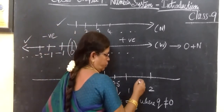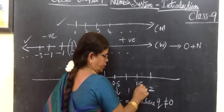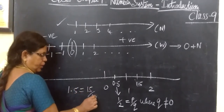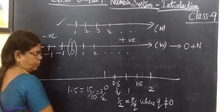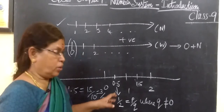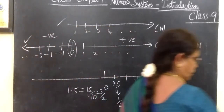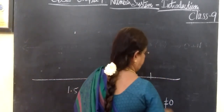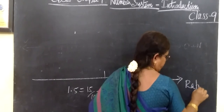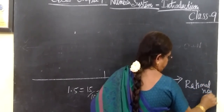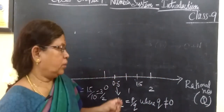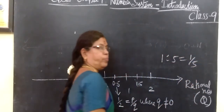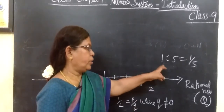Suppose you want to mark 1 and a half: that is 1.5, and in P by Q form, 1.5 equals 15 by 10, which simplifies to 3 by 2. This is of the form P by Q. All such P by Q form numbers are known as rational numbers, denoted by Q — Q for quotient. Rational means the ratio of two numbers; if it is 1 to 5, you can write 1 by 5, which is of the form P by Q.